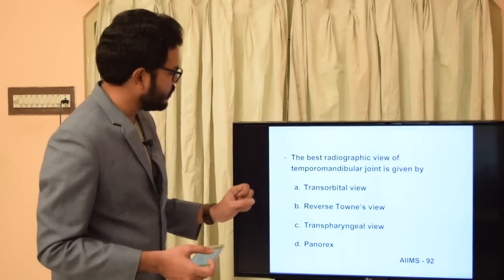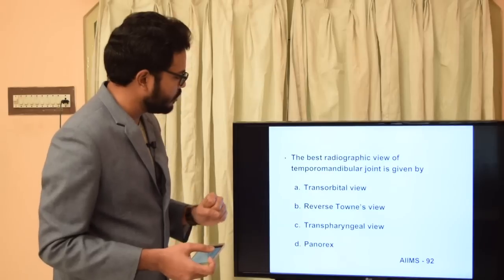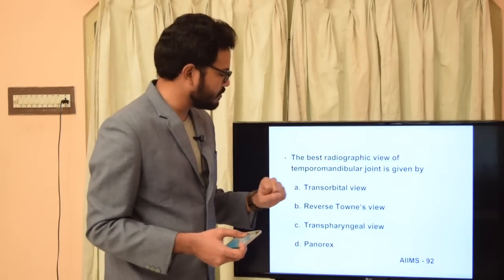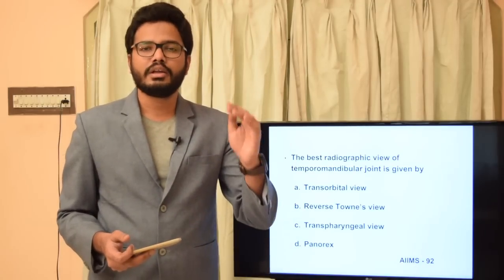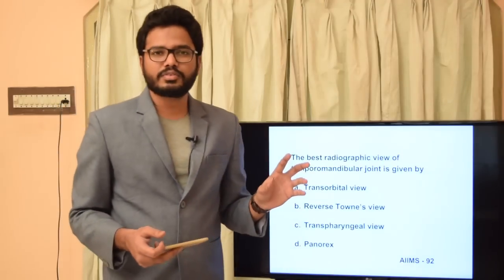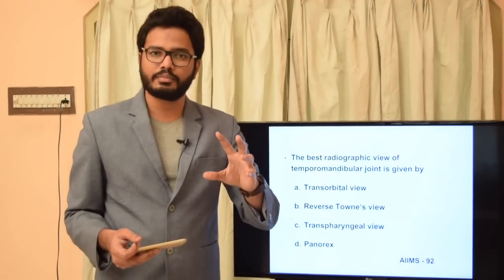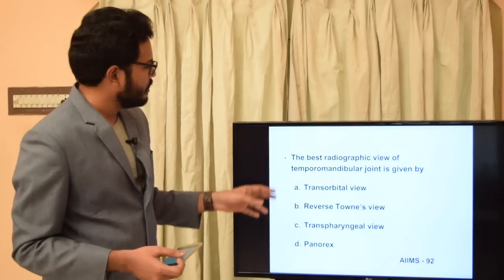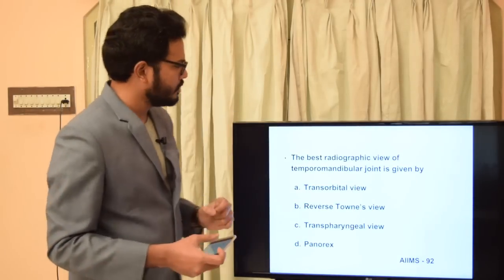The best radiographic view of the temporomandibular joint: (a) transorbital view, (b) reverse Towns view, (c) transpharyngeal view, or (d) orthopantomograph. The best radiographic view for TMJ is obtained by the transpharyngeal view, also called the infracranial view. Reverse Towns view is mainly for subcondylar fractures, but for evaluating the entire TMJ, transpharyngeal or infracranial view is preferred.